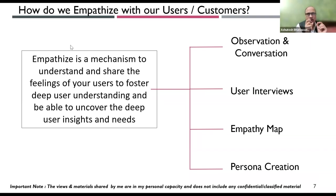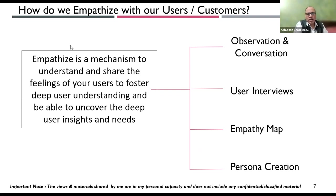There are many things users will not talk about — they may remain silent, shy, or introverted and not reveal everything. We have techniques for empathizing and identifying user needs: observation and conversation, user interviews, empathy maps, and persona creation. These are some of the tools available. Have any of you used these tools as a product owner or product manager?